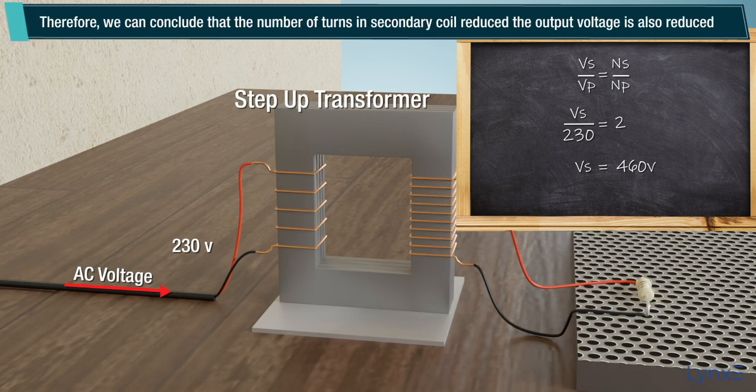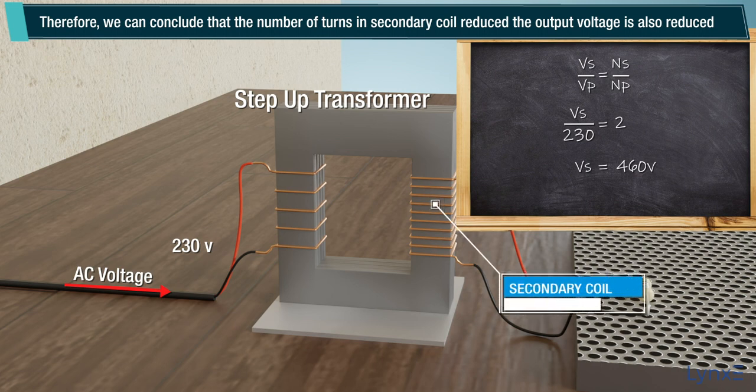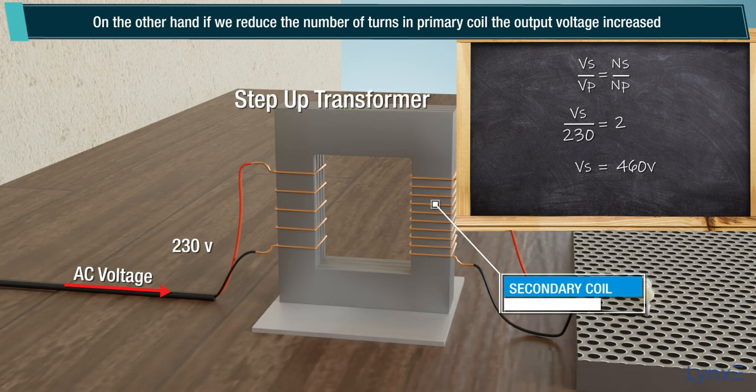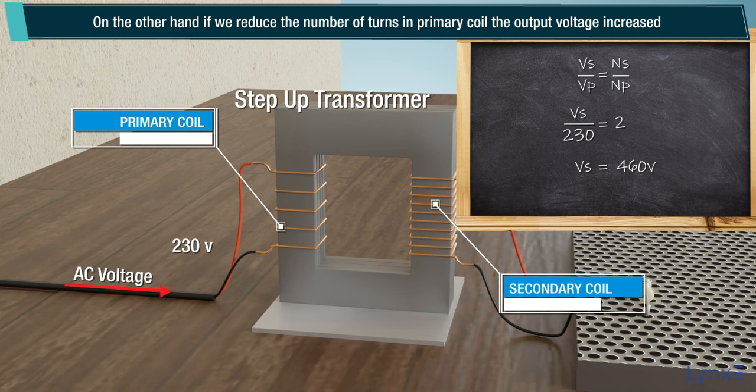Therefore, we can conclude that the number of turns in secondary coil reduced, the output voltage is also reduced. On the other hand, if we reduce the number of turns in primary coil, the output voltage increased.